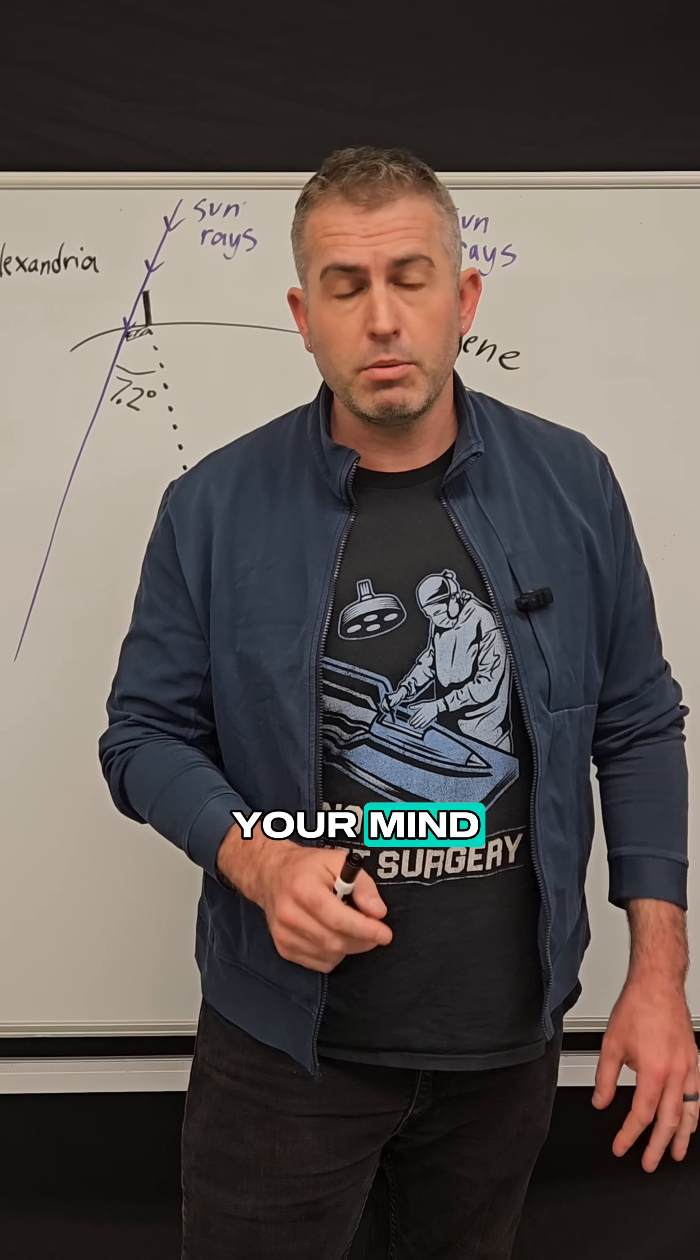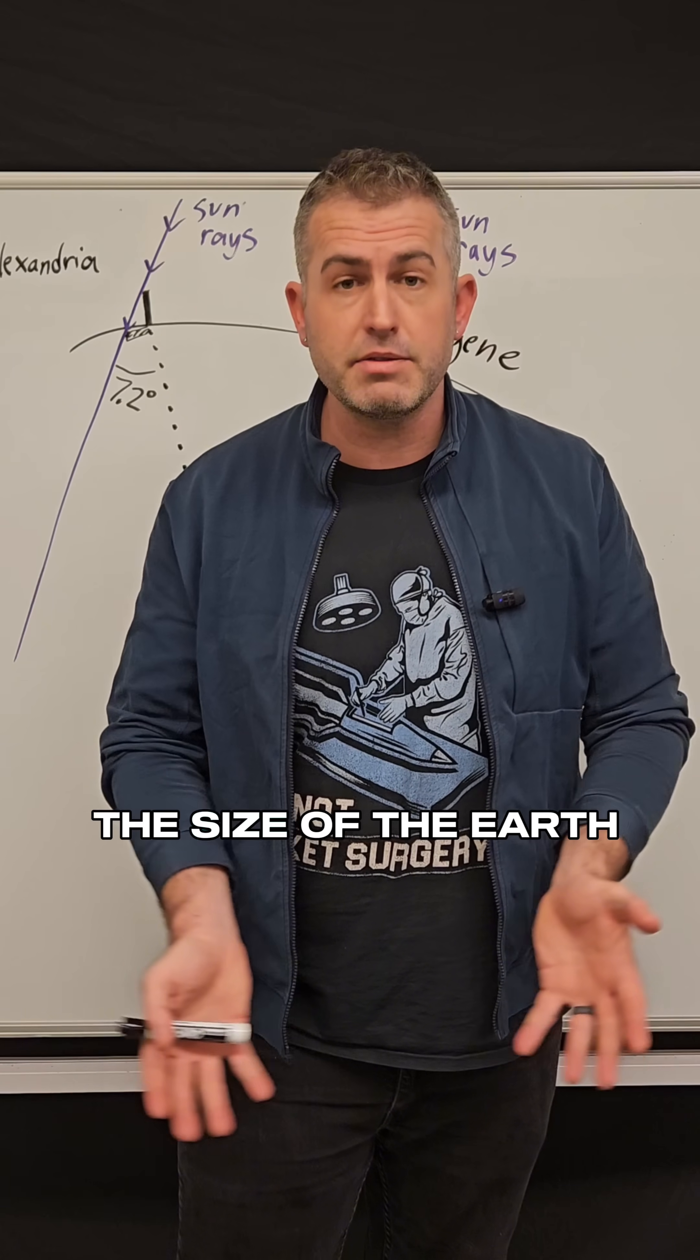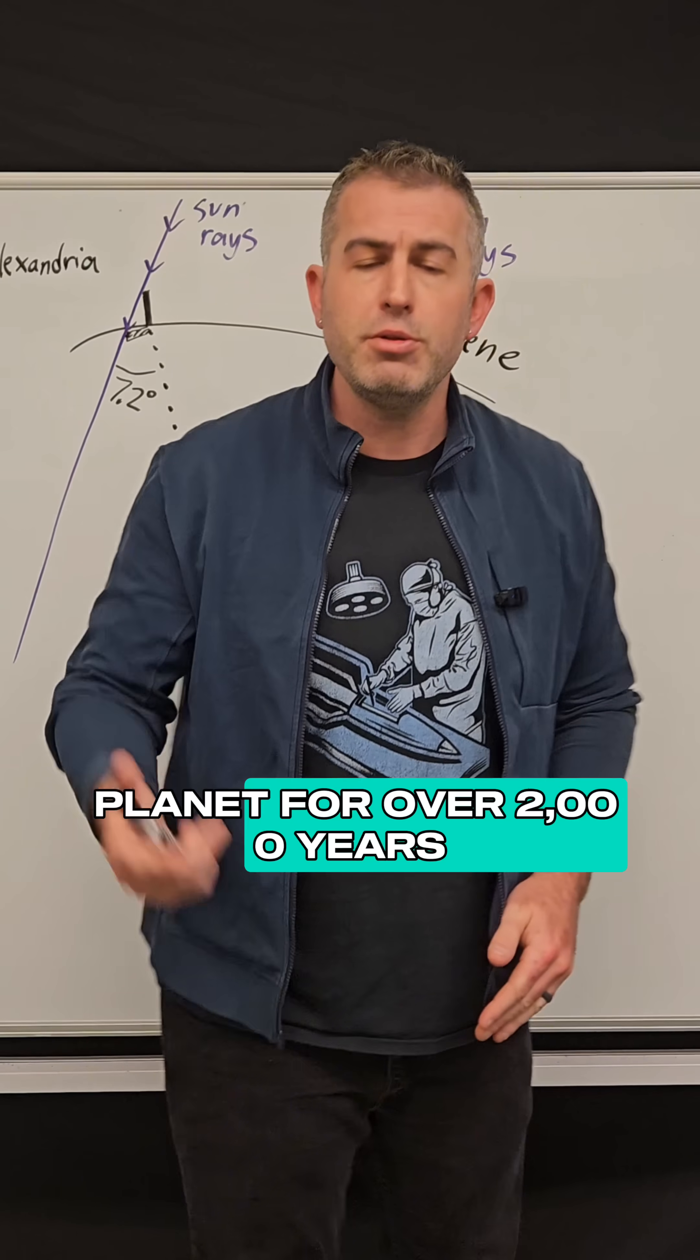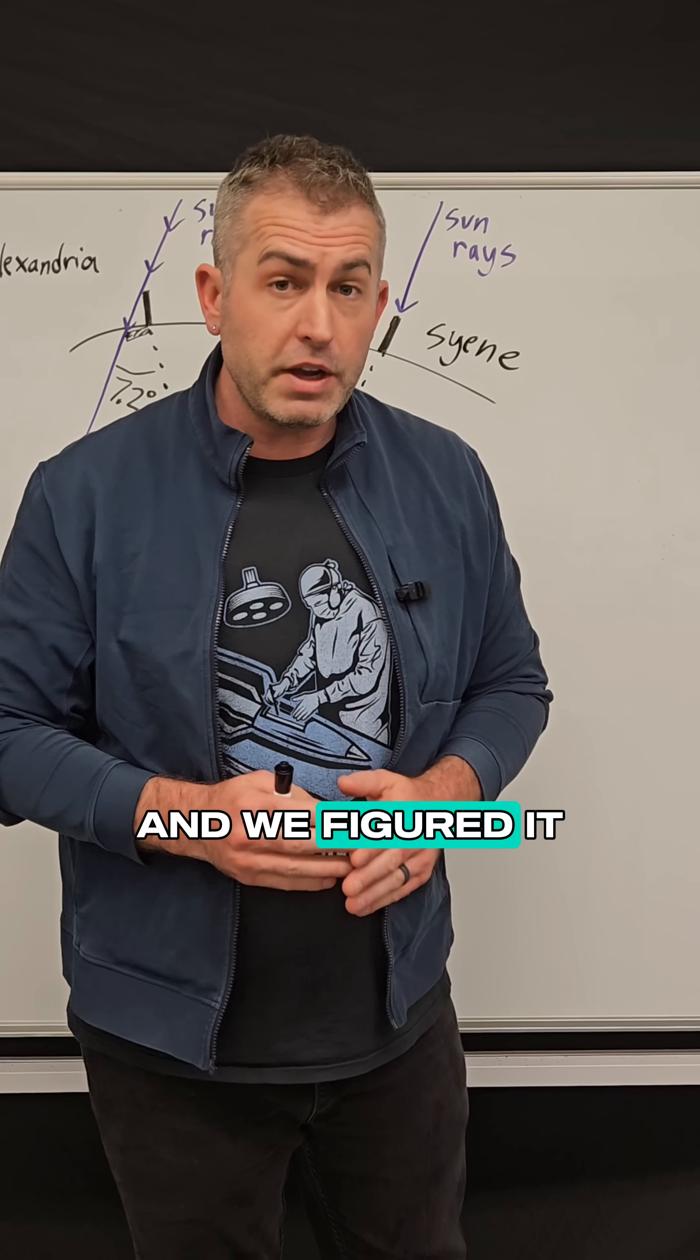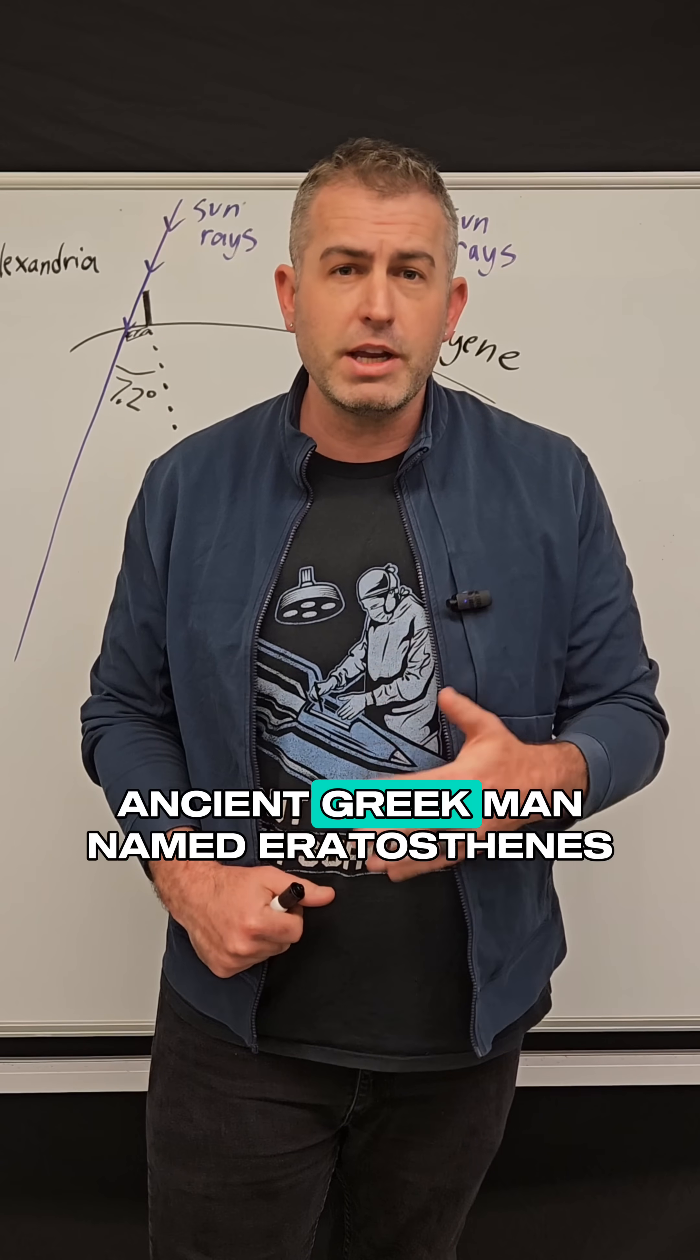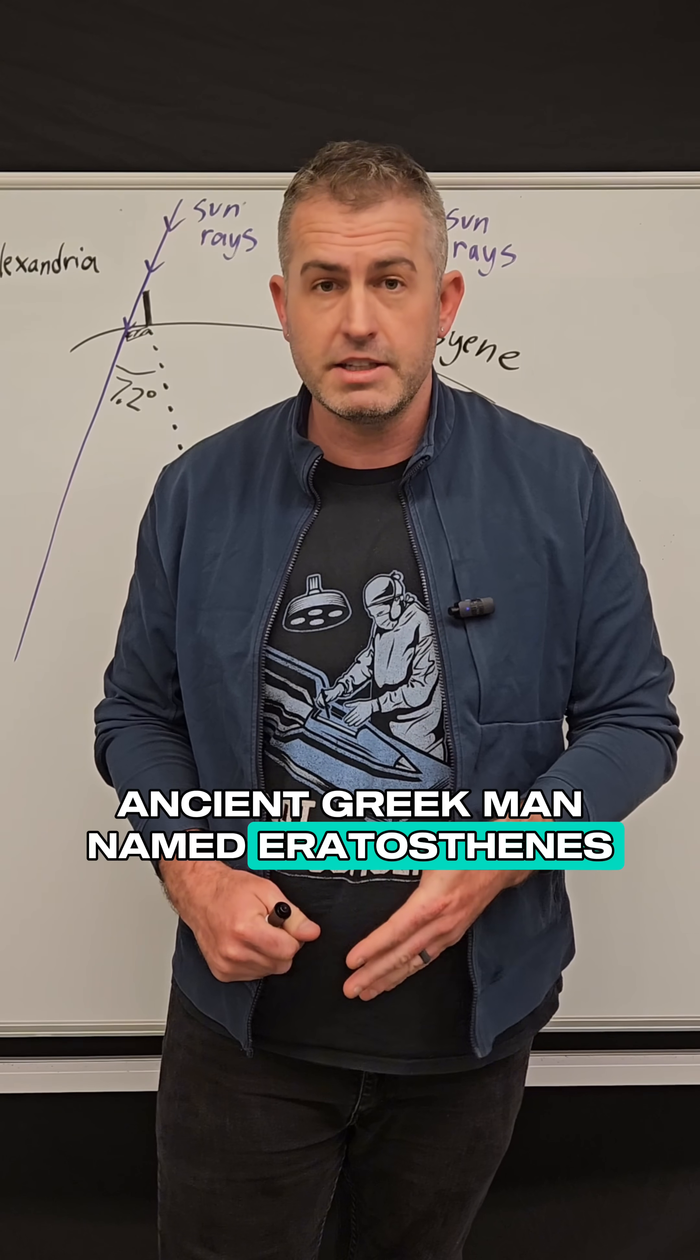This is gonna blow your mind. We have actually known the size of the earth, the circumference, the distance around the planet for over 2,000 years and we figured it out not due to satellites but due to an ancient Greek man named Eratosthenes.